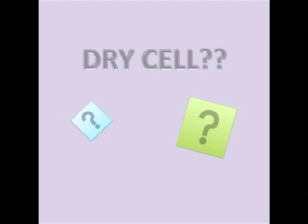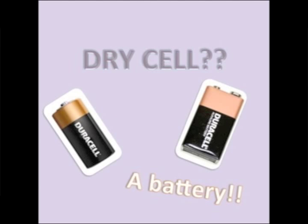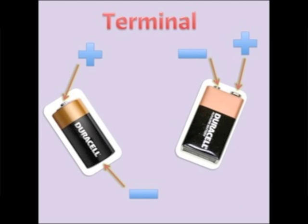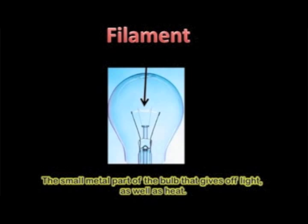Have you ever heard of the term dry cell before? Dry cell is actually another way to say battery — it's basically our power source from which our light bulb can be lit. The terminal is the ends of the dry cell, both positive and negative ends. You probably know from putting batteries in your electronic devices that batteries have positive and negative ends.